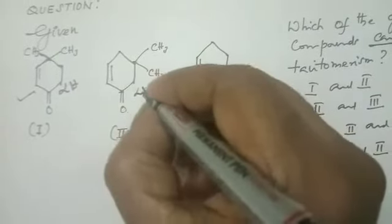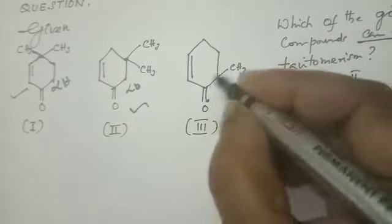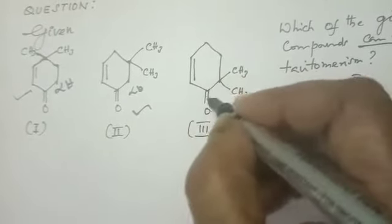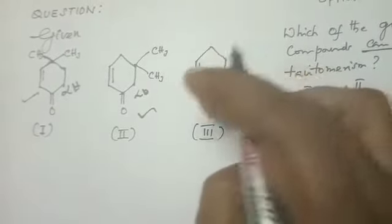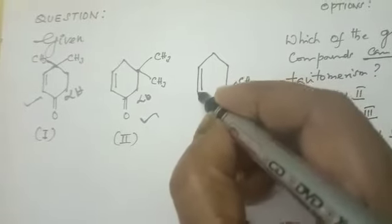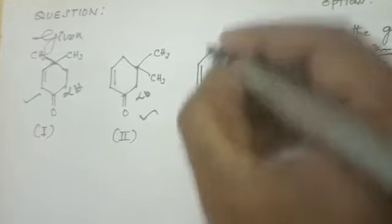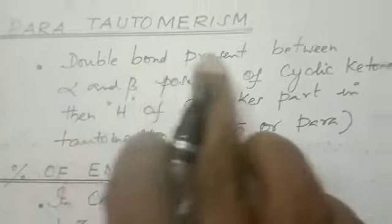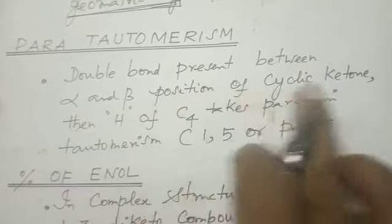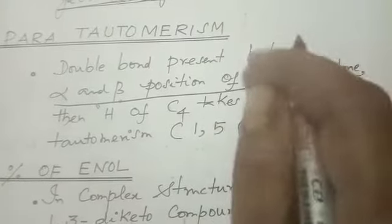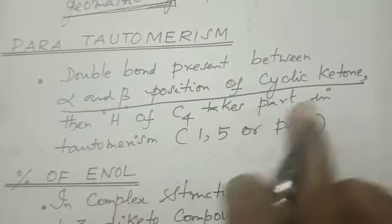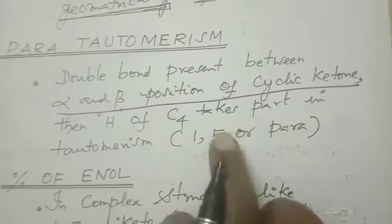Now the third compound — here double bond O is there, but no alpha hydrogen directly. However, 1, 2, 3 — of course hydrogen is there. This will be answering, but with a different concept. When the double bond is present between the alpha and beta position of a cyclic ketone, the hydrogen from carbon 4 takes part in Tautomerism. This is called as M1,5 or Para-tautomerism.